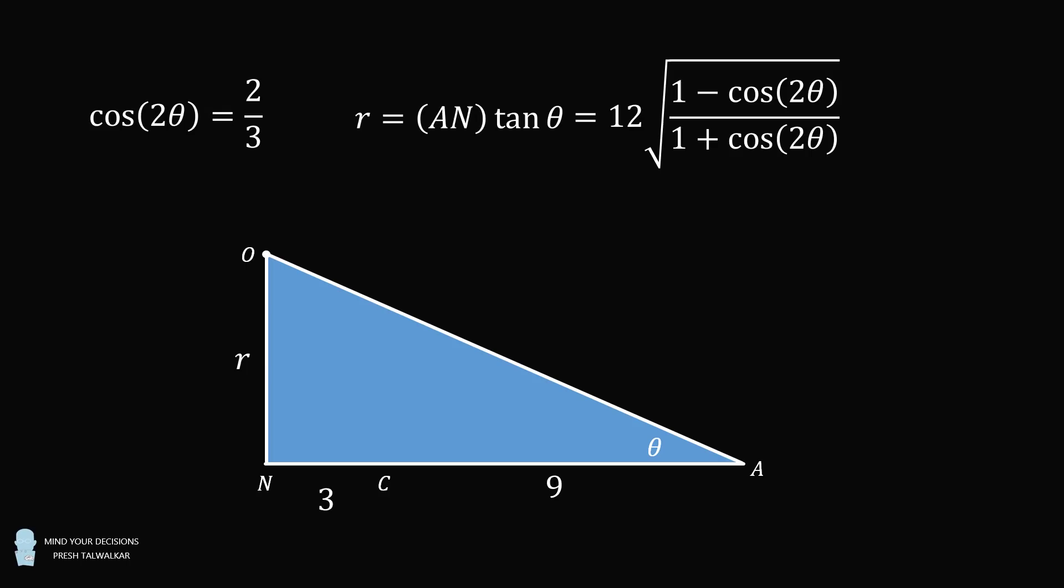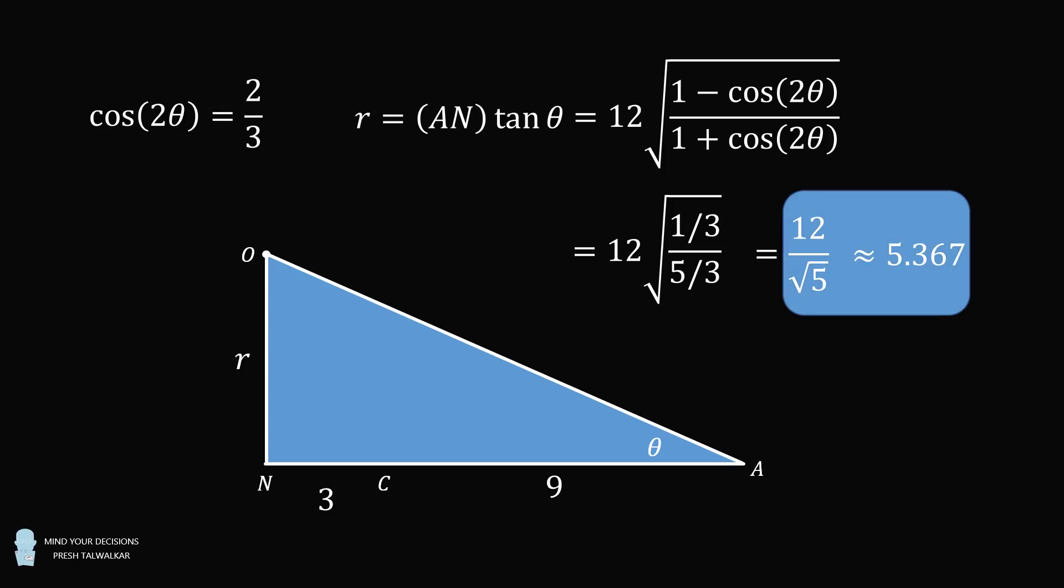So AN is equal to 12, and we've substituted in the tangent half angle formula. We know that the cosine of 2 theta is equal to 2 over 3. So we then simplify, and this gives that R is equal to 12 divided by the square root of 5, which is approximately equal to 5.367, and that's another way to solve the problem.